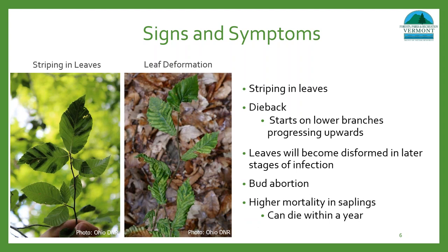In the early stages of infection, beech leaves begin to develop a striping pattern between the leaf veins. In more severe infections, the darker area has been observed as slightly raised and thicker than normal tissue — almost a leathery texture — which can lead to leaf deformation. Over time, an infected tree will experience dieback starting in the lower branches and progressing upward. In younger trees, disease progression is rapid, leading to high mortality of saplings and understory beech. Studies show symptoms do not progress throughout the growing season, supporting the hypothesis that nematodes overwinter inside the bud and affect leaves before bud break. Nematodes inside the buds can also lead to aborted, empty, or crispy buds at the end of an infected branch.